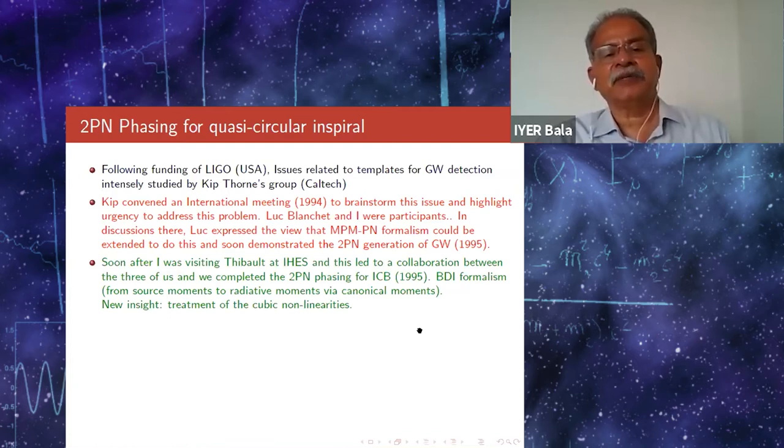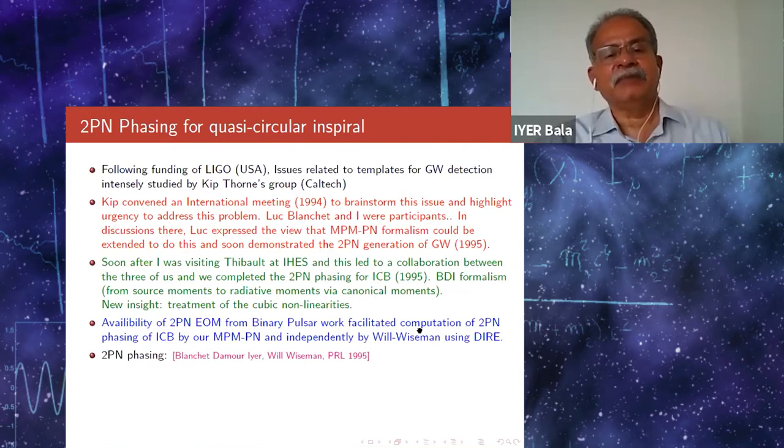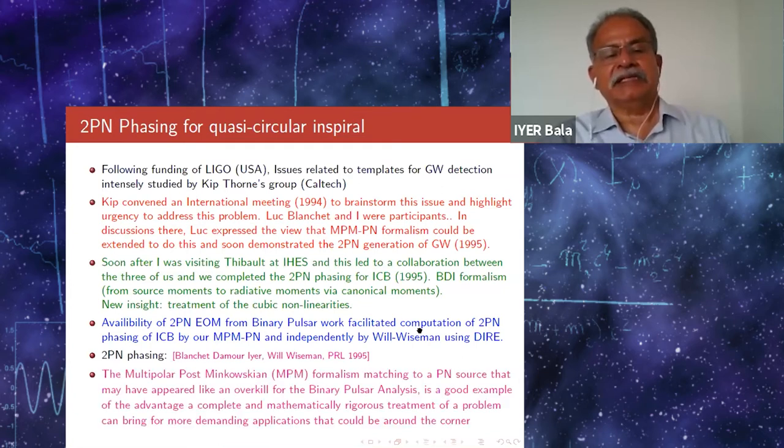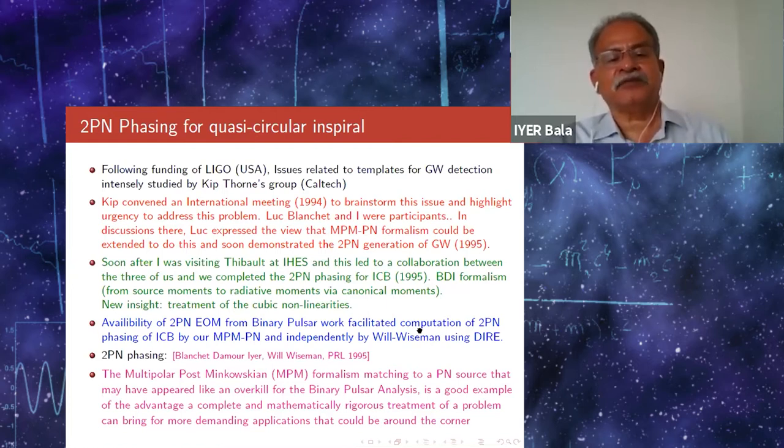The new insight required was a treatment of the cubic nonlinearities. The availability of the 2PN equation of motion from the binary pulsar work, which Pyotr referred to, was the contribution from Thibaut himself. It really facilitated the computation of the 2PN phasing by our MPMPN and independently by Will and Wiseman using Dyad. It was clear to me that the multipolar post-Minkowski formalism matching to a post-Newtonian source is a good example of the advantage a complete and mathematically rigorous treatment of a problem can bring for more demanding applications that could just be around the corner.